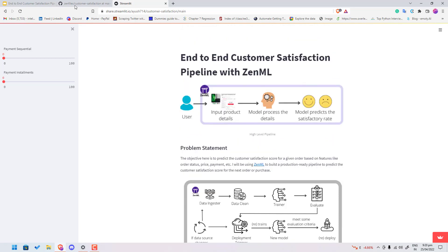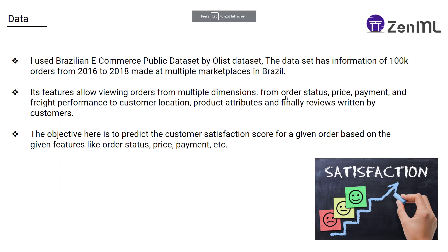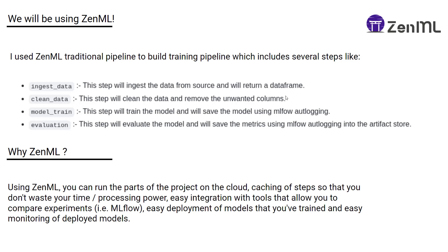Please go to our README to see the code. We've used an e-commerce public dataset which I've manipulated into a fairly simple dataset with some features and a review score column — you can see the data in the project's data folder. ZenML, as I mentioned, is an MLOps tool that integrates frameworks like MLflow, Airflow, Kubeflow, etc. The pipeline steps include ingest data, clean data, model train, and evaluation, each with their own functionalities, all well-documented in the README.